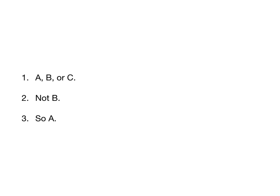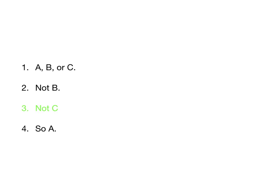The form is: A, B, or C; not B; so A. Validity is about whether the premises can be true and the conclusion false. Well, how could these premises be true and the conclusion false? It could be C. Not B means it has to be A or C, but to say A is the only possibility, we have to get rid of C — that's the hole in our argument. For the argument to be valid, we need to plug that leak: A, B, or C; not B; not C; so A. Now the argument is valid — we've eliminated all possibilities except A.